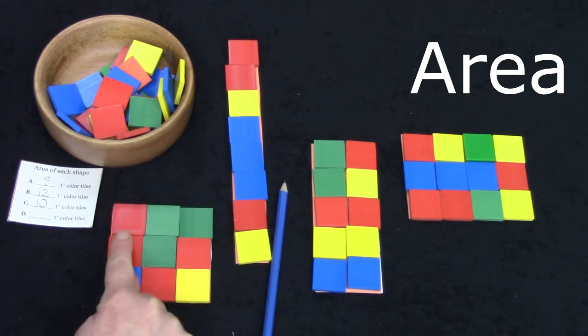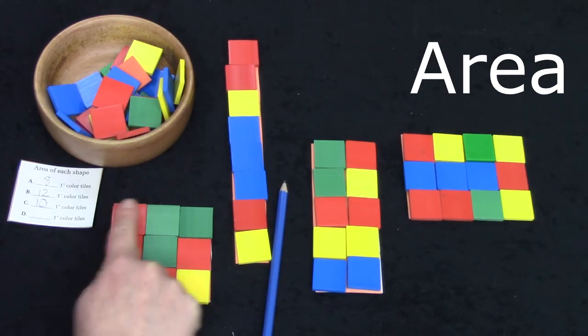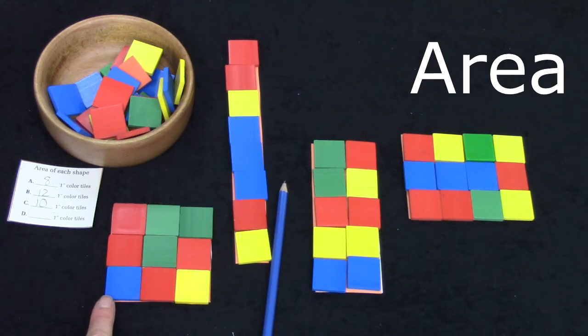One, two, three, four, five, six, seven, eight, nine. This square, the area of this square is nine one inch tiles.